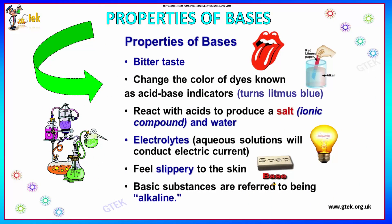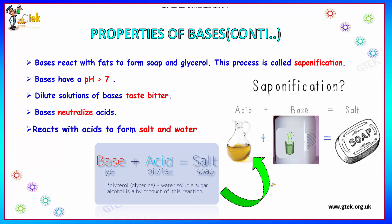Reviewing the properties of bases: it is bitter in taste and turns litmus paper blue. It reacts with acids to produce salt and water. It is an electrolyte — its aqueous solution conducts electric current. It feels slippery on the skin. A base reacts with fats to form soap and glycerol in a process called saponification. Bases have a pH value greater than 7, they taste bitter, neutralize acids, and react with acids to form salt and water.